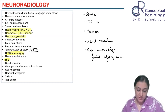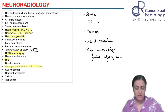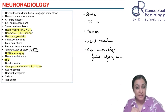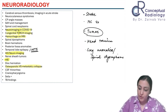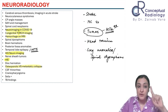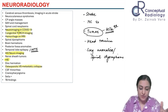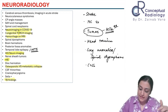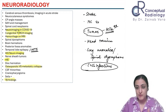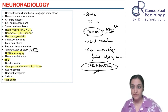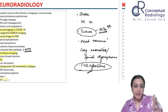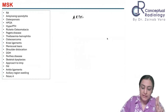Brain tumors we just finished, herniation is covered, and degenerative versus osteoporotic versus metastatic collapse can be covered as a table. CSF rhinorrhea — Dr. Deepak is taking that as a dedicated session. Craniopharyngioma is done. Sella tumors are the most important — pituitary adenoma, craniopharyngioma, and sella tumor approach have each been asked separately. TB findings fall under CNS infections, which I'll take as a holistic class in October.